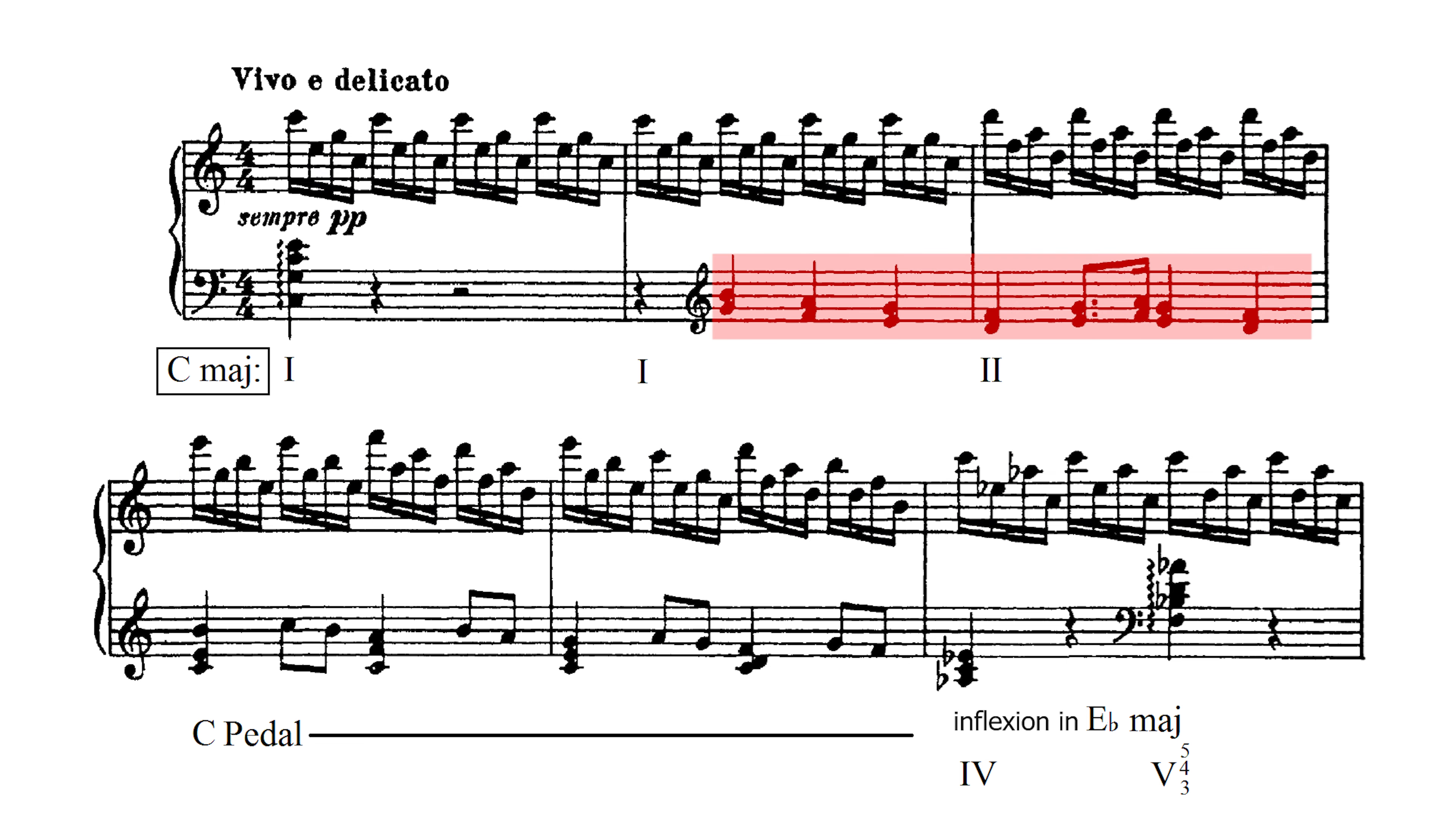In bar 4, Prokofiev uses a pedal tone on C, on top of which we can distinguish other chords. For example, a third scale degree, a subdominant, the mediant again, and a second scale degree. Notice that the top note of the melody moves down a whole tone every time, also here from F to Eb.